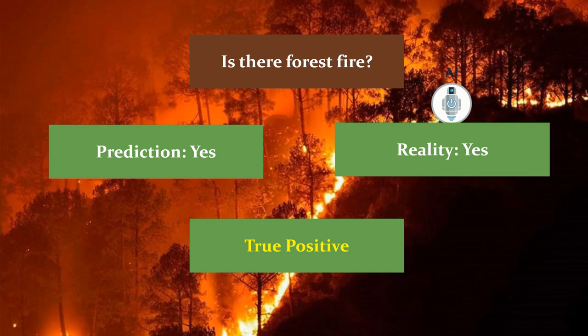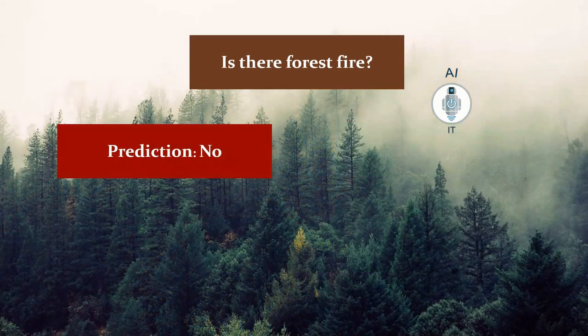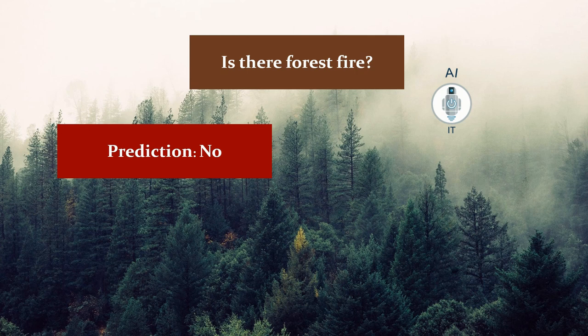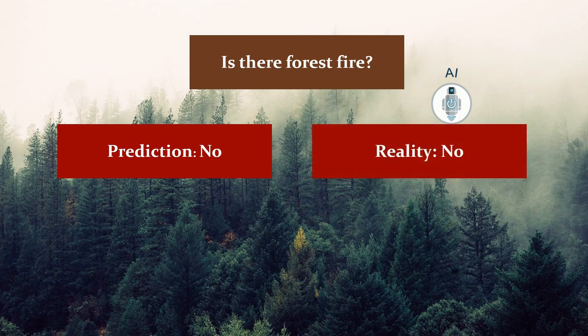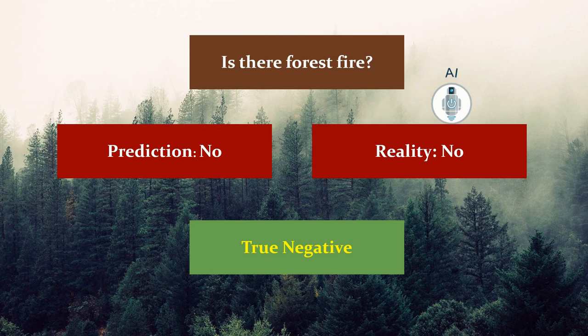Now in the second picture, the machine predicts no — that means it is a negative prediction. The reality here also shows no forest fire. So it is a negative prediction that matches with the reality. Hence we call this condition true negative.